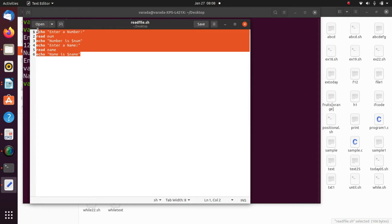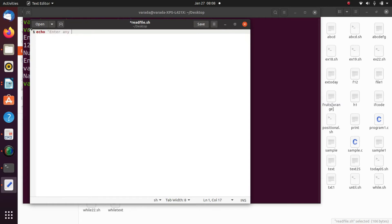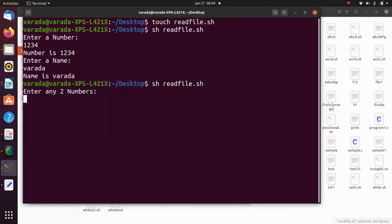Now you see how we can read multiple values. Echo, enter any two numbers. Read num1 space num2. Now, we are going to perform arithmetic operation. S equals to expr space dollar num1 plus dollar num2. Now, we are going to print the sum. Sum equals to dollar s. Save the program. Go to the terminal. Enter any two numbers. 10, 20. Sum equals to 30. Here we read multiple parameters at a time.